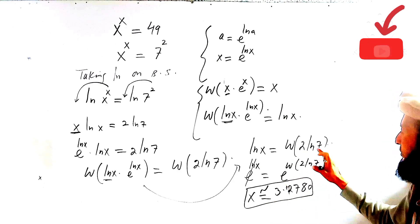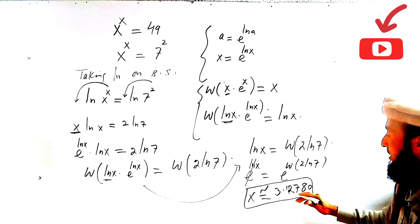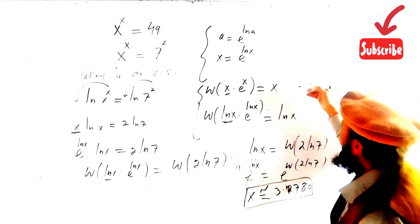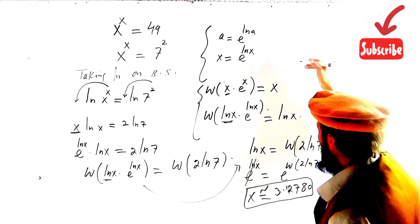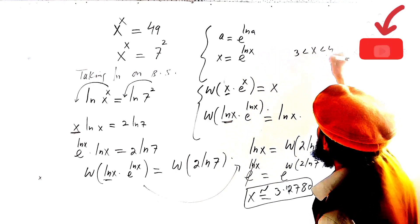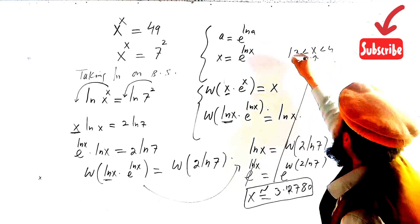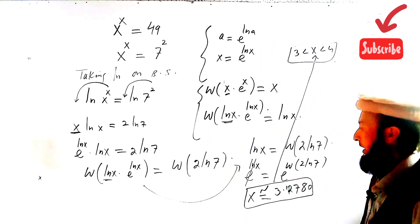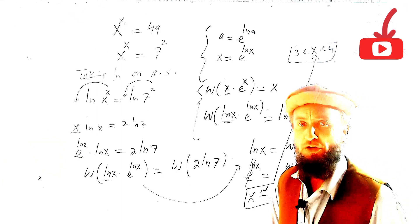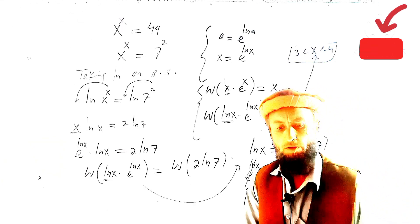Using the calculator for the W function, we get the answer x ≈ 3.1 to 3.2780. This confirms our earlier step where we found 3 < x < 4, so our answer lies correctly in that range. Thank you very much for watching — please subscribe and share this video.